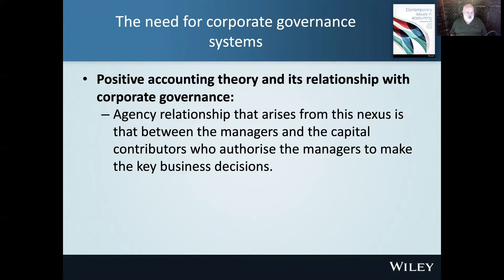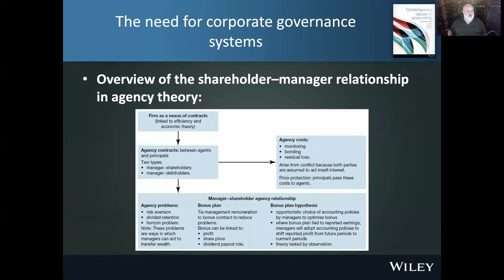Positive accounting theory explains that for efficiency reasons, companies are formed that can be viewed as a nexus of contracts or agreements that determine the relationship with and among the various parties involved in the firm. There's an agency relationship that arises from this nexus — a separation of management and control. Capital contributors authorise managers to make key business decisions on their behalf, and managers may not necessarily make the best decisions on behalf of the contributors. We can have an agency problem, and with that, we have agency costs, and there are various ways of managing the agency problem.